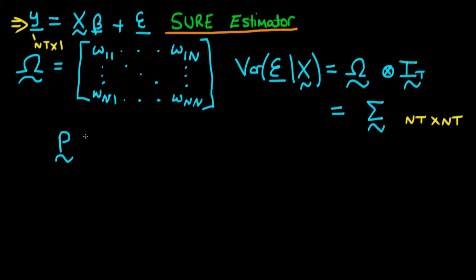So we multiply the dependent variable by some unspecified matrix P, which we're actually going to derive in this video. And then we have to do the same to the right-hand side, so that's PX beta plus P times epsilon.